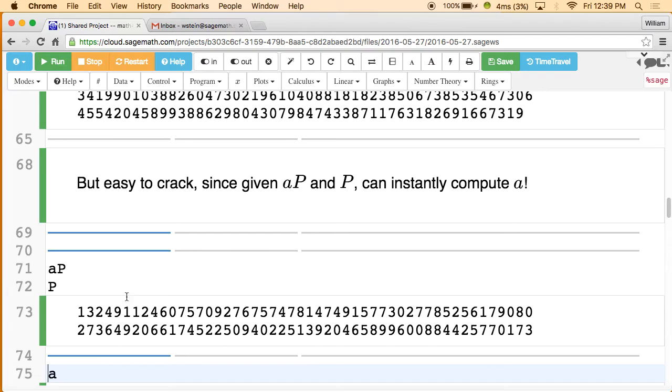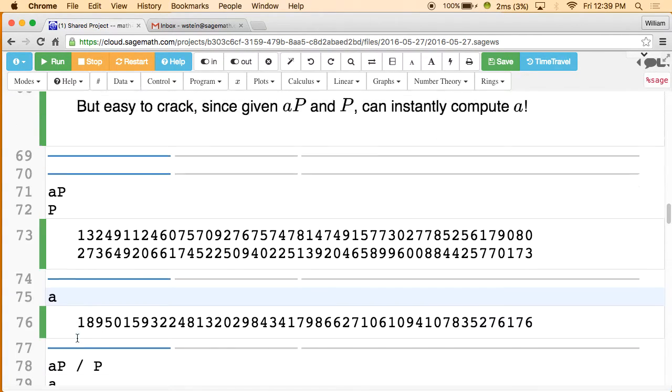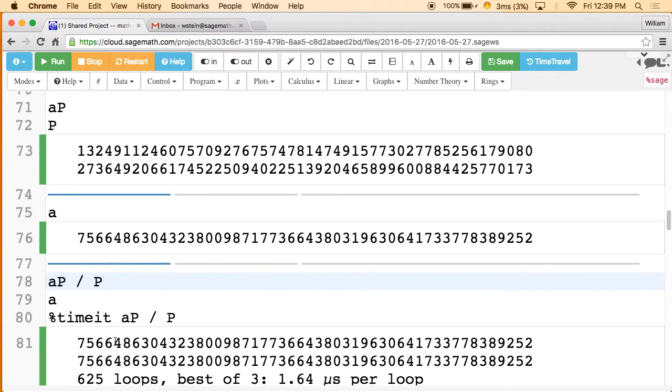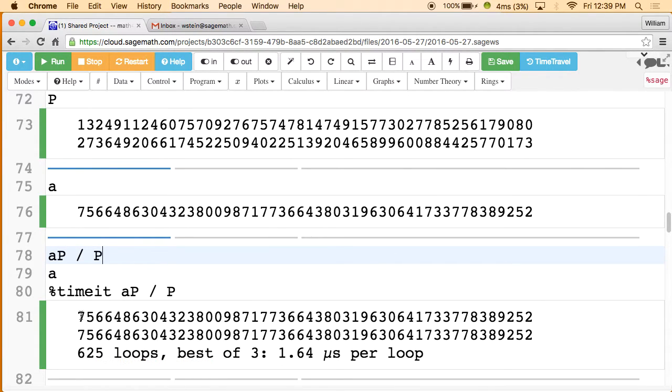But still, look, given aP, P, and p, it's easy to find a. Watch. Here's what a really is. And then you can do this divides. And look, it found it. See? The very first line, let's do aP divided by P, and it can find it in 1.64 microseconds. So the discrete logarithm in the additive group of numbers modulo p turns out to be something you can trivially solve. And the way you do that in SageMath is using the Euclidean algorithm, which has complexity polynomial in the number of bits of the input. So it's super fast. So the additive group is no good.